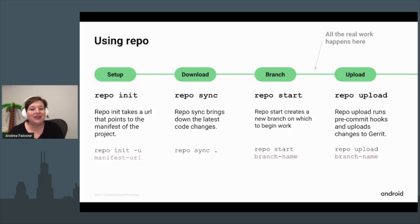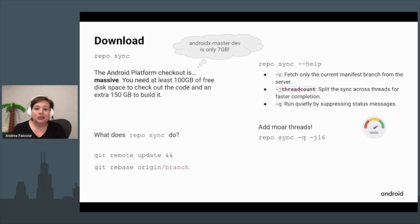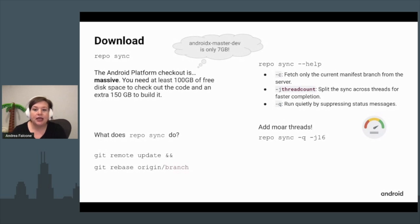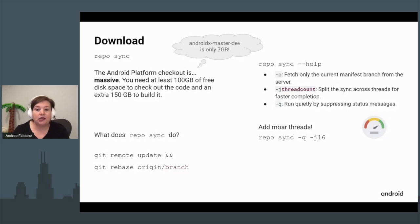After `repo sync`, `repo start` will create a new branch for you to begin working on, and `repo upload` will run some pre-commit hooks and upload your changes to Gerrit. Depending on which repo and branch you're downloading, this can take quite a while and use a lot of disk space. The AndroidX master-dev checkout is much smaller than the Android platform checkout. `repo sync` can be sped up by allowing it to run on more threads.